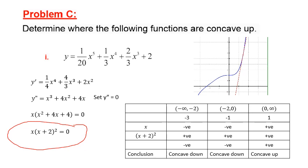From the table, we can establish where the second derivative is positive and where it's negative. The factor (x+2)² is always positive, so the sign depends on x. The second derivative is negative from -∞ to -2 (concave down), still negative from -2 to 0 (still concave down), but positive from 0 to ∞ (concave up). So the concave up section is from zero to infinity — that answers the question.